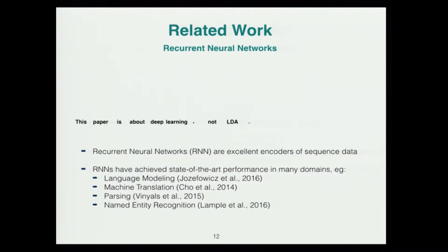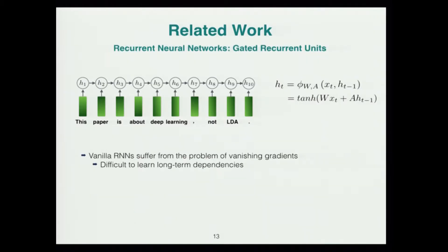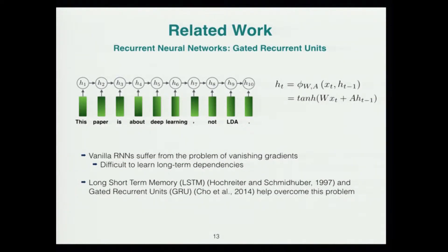Recurrent neural networks consume text sequentially: you have an embedding for the first token, apply a nonlinear transformation to obtain the first hidden representation, and for every subsequent token, apply a transformation to the current embedding and the previous hidden state to obtain the new hidden state. You do this for all tokens to get representations informed by all content seen so far. However, vanilla RNNs suffer from vanishing gradients, making it hard to learn long-term dependencies. Long short-term memory and gated recurrent units are special architectures with gates that adaptively learn to remember parts of input sentences. In this work, we use gated recurrent units.